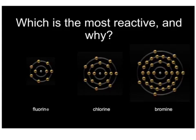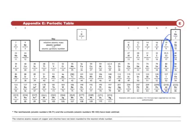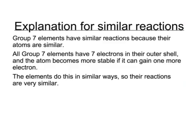In group 7, as we go down the group — fluorine, chlorine, bromine, iodine — they get less reactive. But they all have similar reactions because they're all in group 7 and have seven outer electrons. In order to become stable, these elements need to gain an electron, so they all do this in similar ways, for example by reacting with sodium. As you go down the group, they have more shells of electrons, and the outer shell becomes further and further away from the positive nucleus, which is what attracts electrons in.